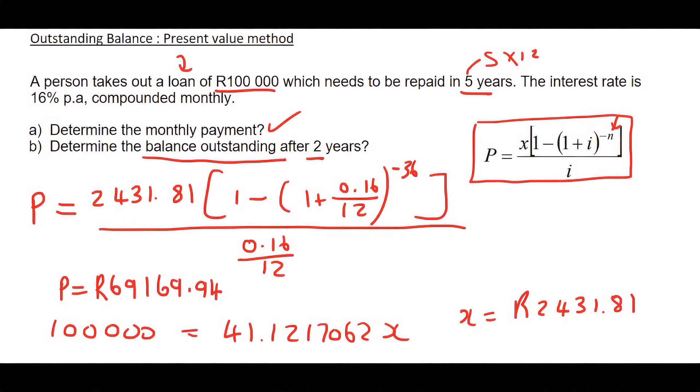So, what that technically means is that that's how much money this person still owes on their loan. That is how much they still need to pay to the bank.